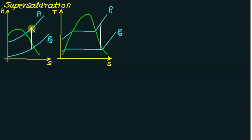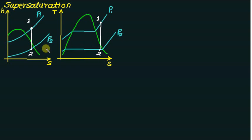So point number 1 is in the superheat region and point number 2 is in the wet region. Here in the TS plot, point number 1 is in the superheat region and point number 2 is in the wet region. So expansion is taking place from the superheat region to the wet region. This is the figure represented on the HS and TS plot. Point A on the graph is where the phase change will occur.